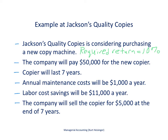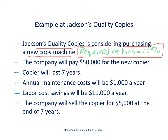The example is Jackson's Quality Copies — we make copies for customers, among other things, and we're looking at purchasing a new copy machine. Our required rate of return as a company is 10%. If a project yields an internal rate of return higher than 10%, we will go ahead and take it on; if it's lower than 10%, we won't.